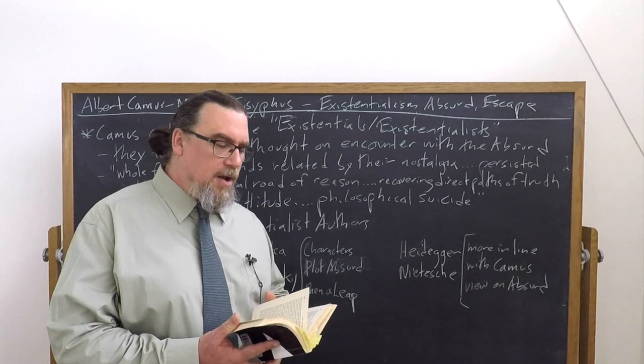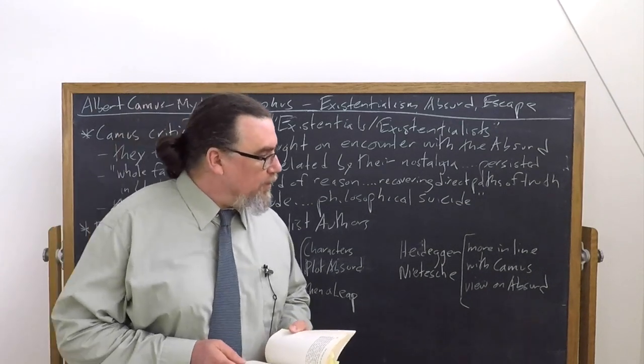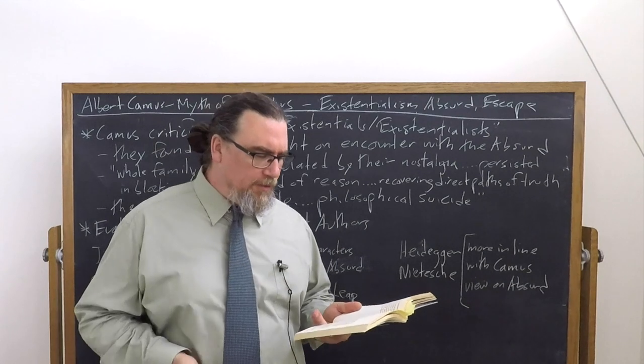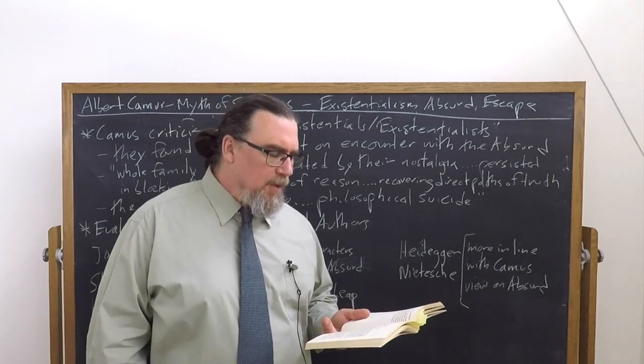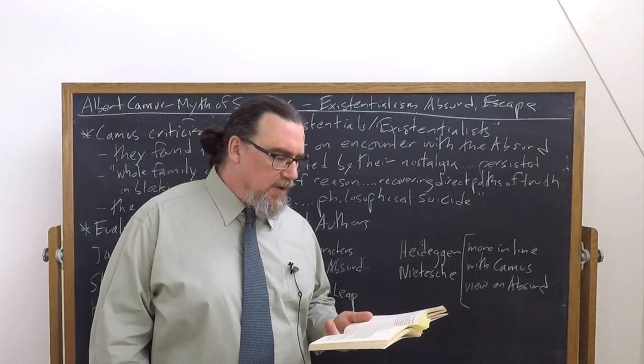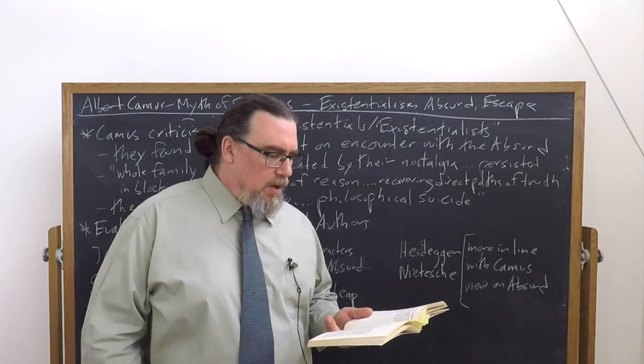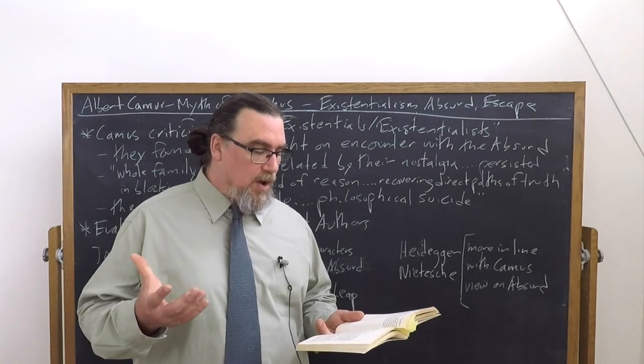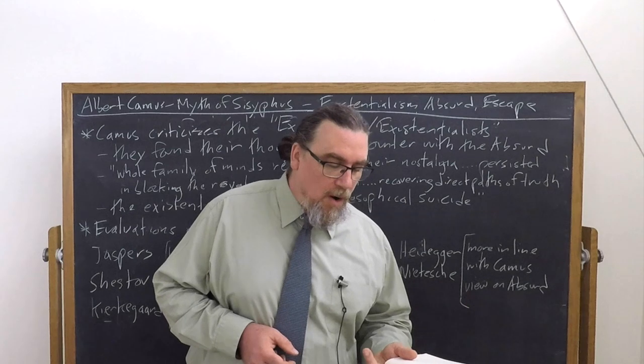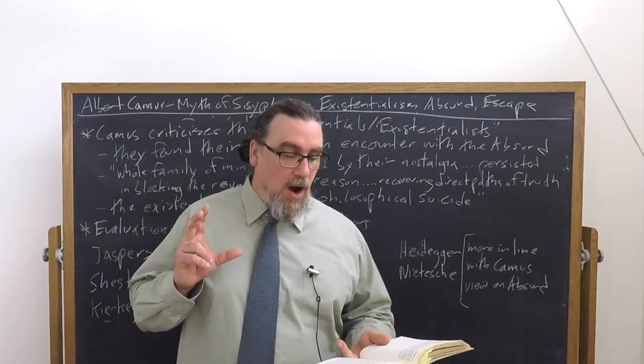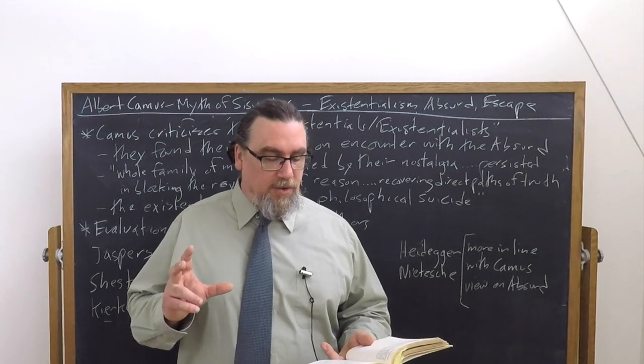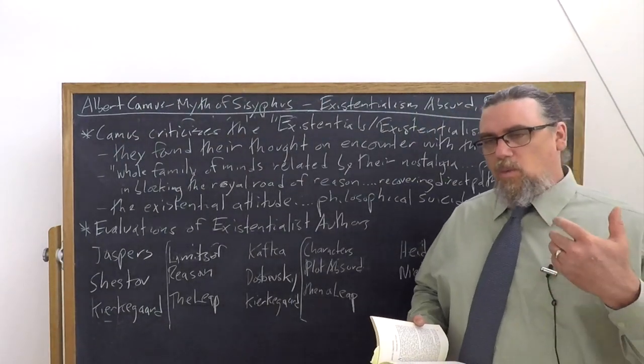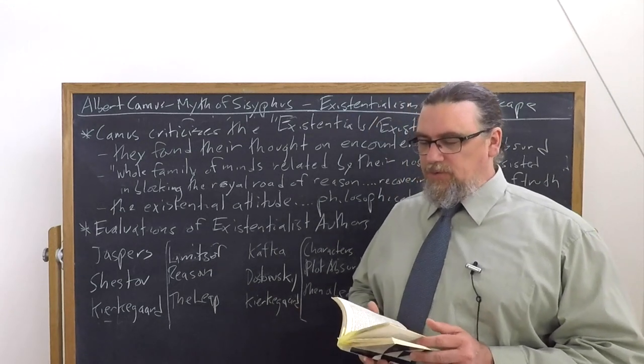Now Camus also mentions Nietzsche at a number of different points throughout the work. I'm just going to bring up two that show you that he seems to view Nietzsche in a rather positive light in terms of this criticism. So he brings them up in the section Absurd Creation with Philosophy and Fiction. And he says that in this regard, with the regard of living with the absurd, learning its lessons, recovering their flesh, in this regard, the absurd joy par excellence is creation. And here he brings up a quote from Nietzsche: Art and nothing but art. We have art in order to not die of the truth. So art provides us, or creativity provides us, with one way of addressing the absurd.